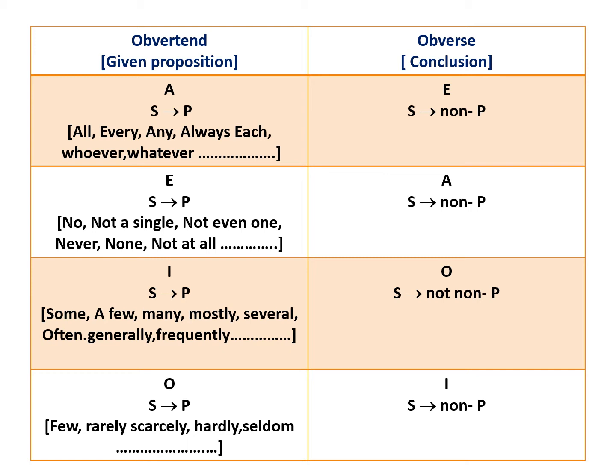Suppose the words used in the given proposition are some, a few, many, mostly, several, often, generally, frequently, etc., then it is an I-proposition. Suppose the basic form of an I-proposition is given as 'some S is P', then its obverse will be O, that is 'some S is not non-P'.